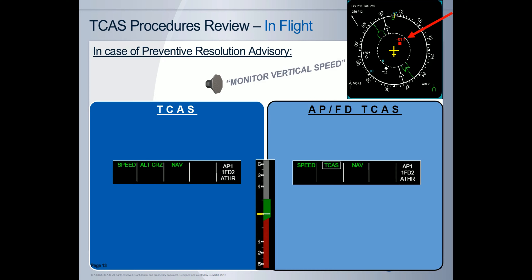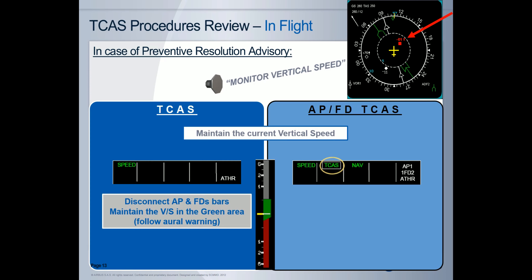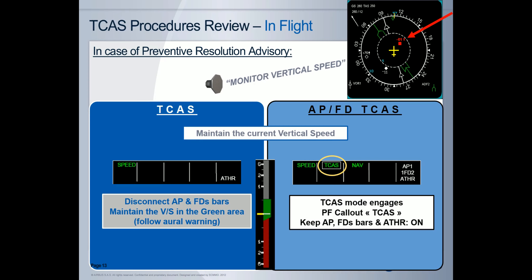Now, if the TA changes into a preventive resolution advisory — for example, 'monitor vertical speed' — the procedure is to maintain the current vertical speed. With the standard TICAS, the pilot must disconnect the autopilot and the FD bars in order to maintain the vertical speed within the green area. With the APFD-TICAS function, the TICAS mode engages, meaning that the blue indication changes into a green boxed indication on the FMA. So the PF calls out the FMA change, 'TICAS,' and must keep the autopilot, the FD bars, and the autothrust ON. The pilot monitors that the vertical speed remains out of the red area of the vertical speed scale.